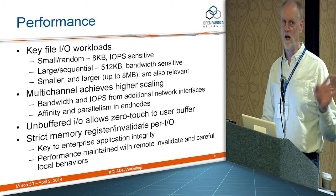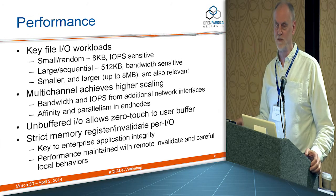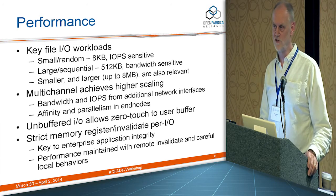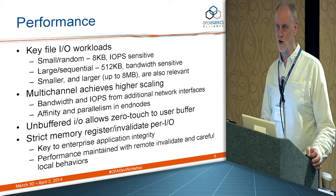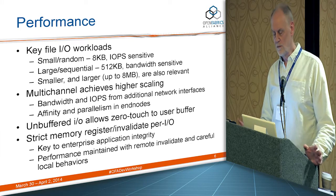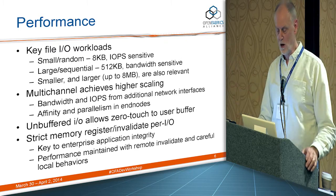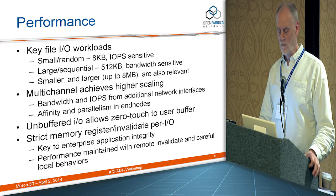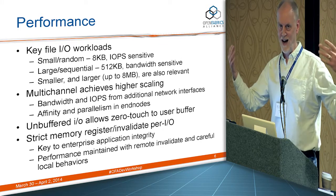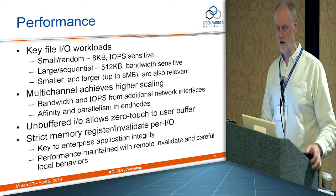SMB Direct delivers incredible CPU savings for both workloads. We typically run around 2% CPU on full-bandwidth large I/O operations, and typically two to five cycles per byte on small I/O. Multi-channel achieves higher scaling — we can use multiple connections and multiple network ports. It gives affinity and parallelism, increases bandwidth and IOPs, and reduces CPU. So multi-channel gives another dimension of performance.